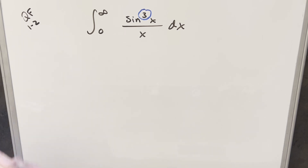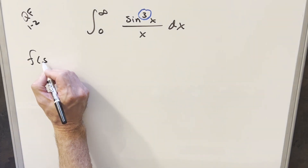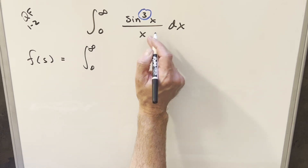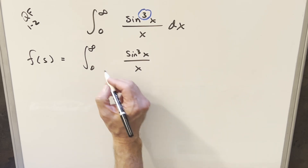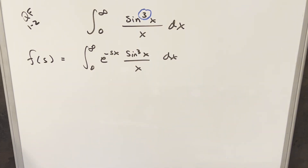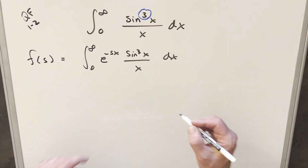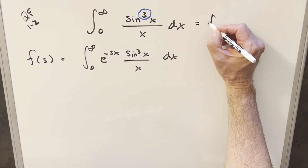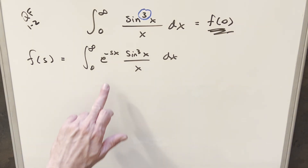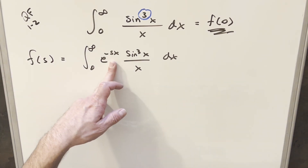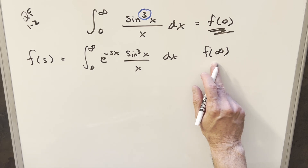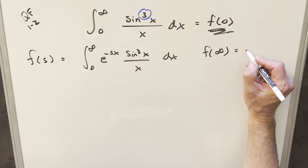So what I want to do is parameterize it — we'll create a new variable s. I'm going to write this integral as a function in terms of s. We'll start with everything we have already, but then I'm going to create this other term e^(-sx). When s equals zero, we have f(0), and notice this first part just becomes one, so f(0) is just the same as our original problem — that's our goal. When s goes to infinity, it's going to zero everything out, so f(∞) = 0, and that's a known value we can use later.